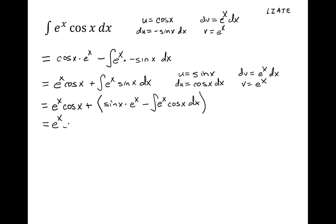This is equal to e to the x cosine x plus e to the x sine x minus the integral of e to the x cosine x dx. Notice that this new integral is identical to the integral that we started with.